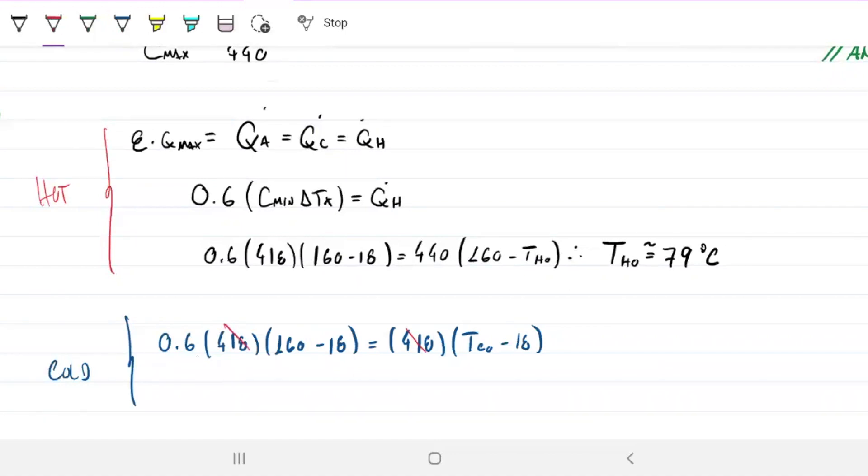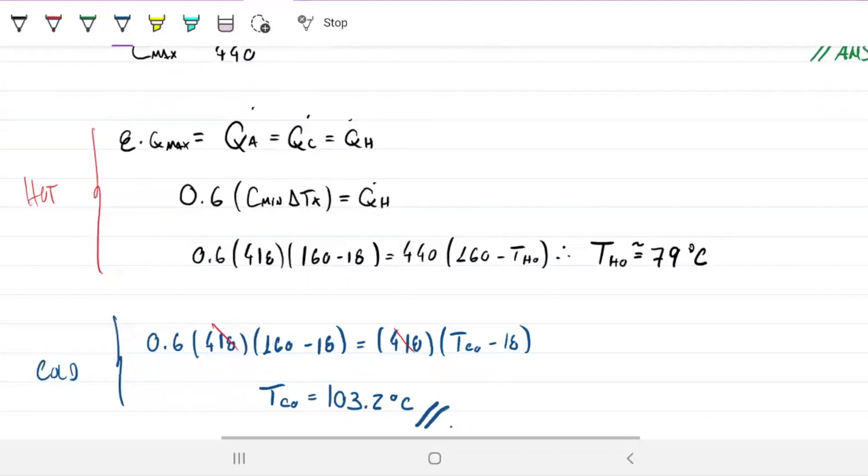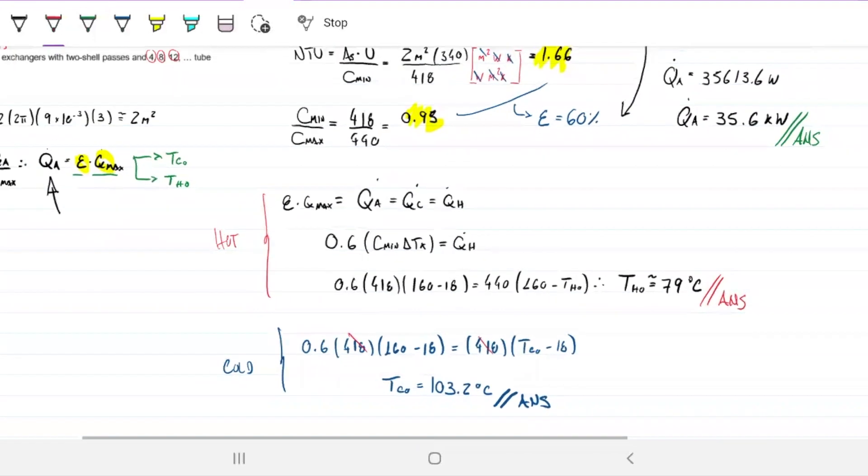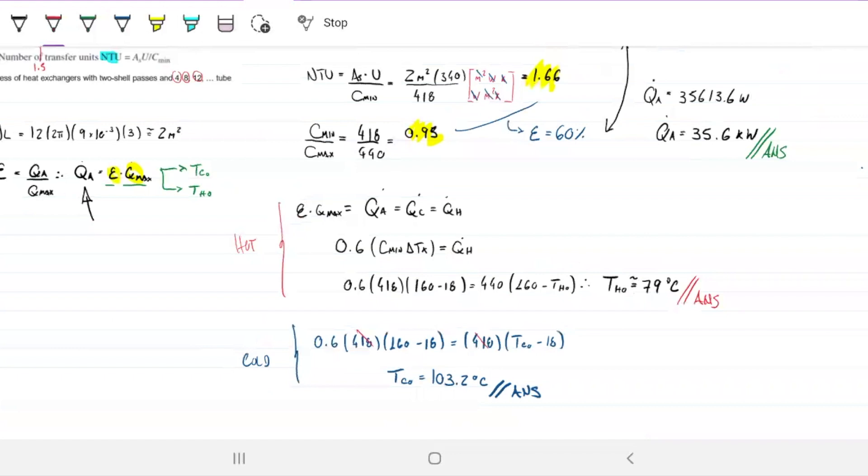T cold out equals 103.2 degrees for the output of the cold, and 79 degrees for the output of the hot. There's heaps of different ways you can solve that. It's all the same thing really, but when you're doing it sometimes you get confused on what you're doing.